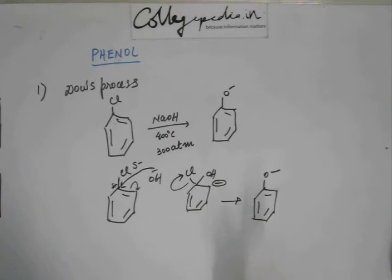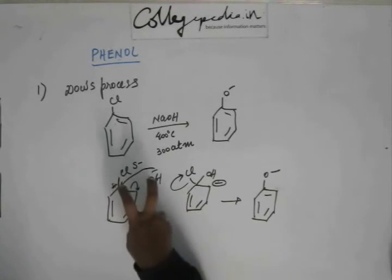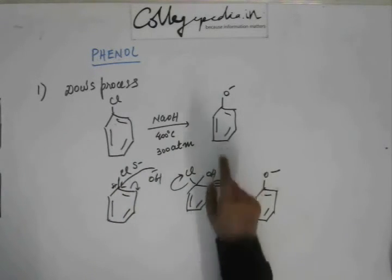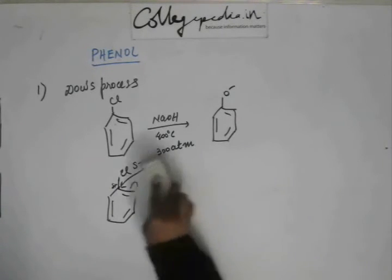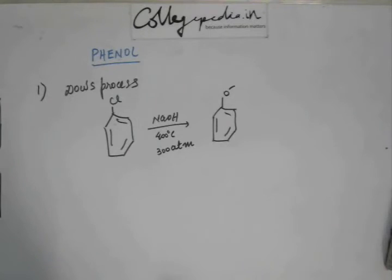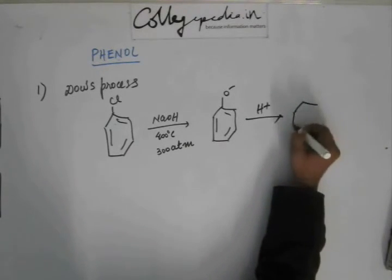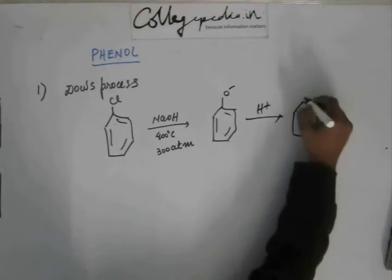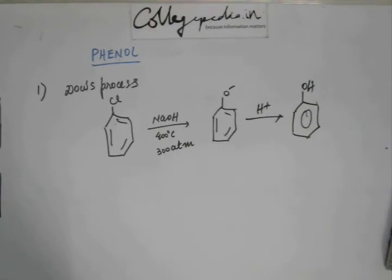So this process is nothing but fusion of sodium hydroxide with this chlorobenzene, and that will result in phenoxide ions - sodium phenoxide. And later when we protonate the sodium phenoxide, then we get phenol. This is simple. This is an industrial method of preparation.